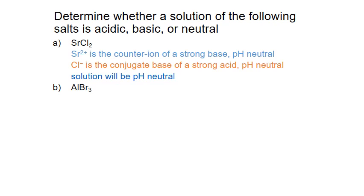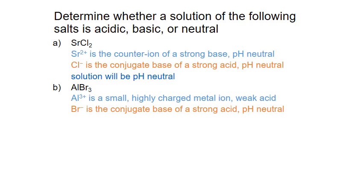Now for aluminum bromide — the aluminum cation is a small, highly charged metal ion, and these types of ions are weakly acidic. Bromide is the anion, and it's the conjugate base of a strong acid, hydrobromic acid, HBr, so the bromide ion is pH neutral. The pH of the salt solution is determined by the cation aluminum, and the solution will be acidic.